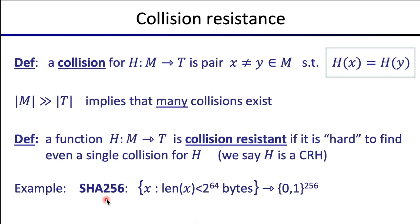If you want to see how collision resistance is built and how SHA256 works, I would refer you to my crypto MOOC. You can look at the lecture on collision resistance — there's a lot of information there on why the hash function is built the way it is and how these collision resistant hash functions actually operate. For now, we'll take SHA256 as a given and assume it's collision resistant.